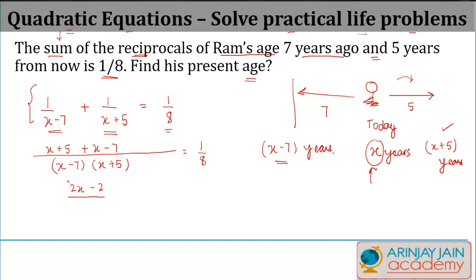Multiplied by 8, I just solve this, multiply this by 8 is equal to X minus 7 into X plus 5. Now just open up the brackets, you get 16X minus 16 is equal to X into X, X squared plus 5X.